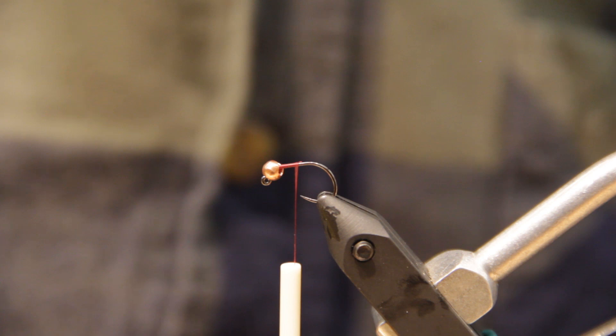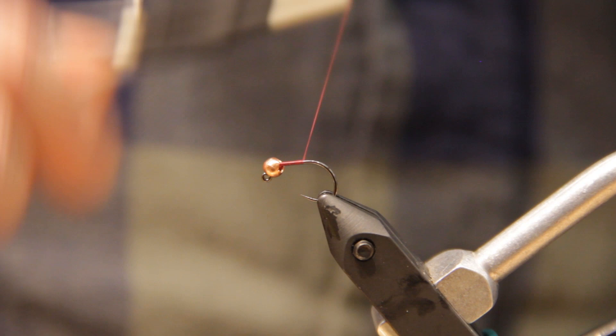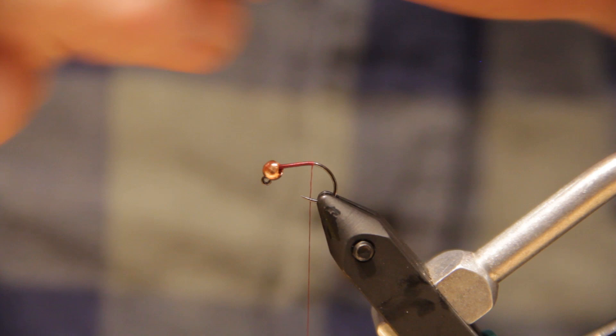So to start off the Crimson Prince Nymph, I'm starting with a true-to-goods upside downy hook. It's a wide-gap jig hook. I really like these. It's gonna be an eighth of an inch copper bead slotted tungsten.